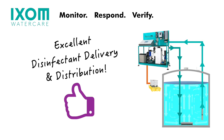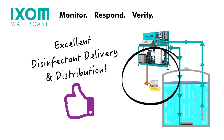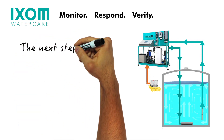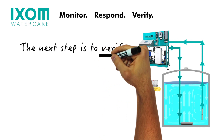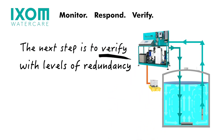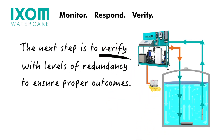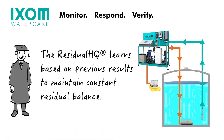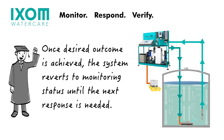You get a rapid, properly ratioed, well-mixed, and safe disinfectant delivery and distribution. Once the disinfectant distribution takes place, the next step is to verify the outcome with levels of redundancy to ensure a proper end result. The Residual HQ learns based on previous experience and results to maintain constant residual balance. Once it achieves the desired outcome, it reverts back to its monitoring status until the next response is needed.